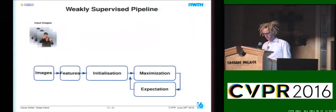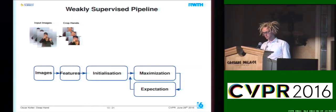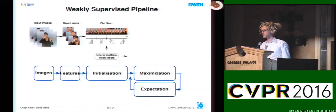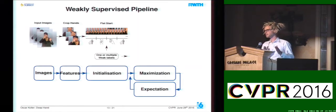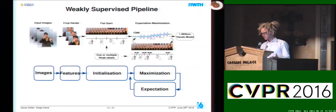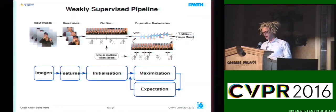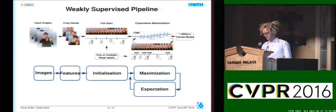Looking at the pipeline in detail: we take input images, track them, perform preprocessing, crop hand patches, and perform per-pixel mean normalization. We initialize the algorithm with a flat start, linearly segmenting the input stream into equidistant parts. We then train our CNN in the first iteration, and use that CNN to perform alignment on our data, refining boundaries and possibly choosing different annotations from the weakly supervised constraints. At the end, we get a strong vision model and the segmentation for free.